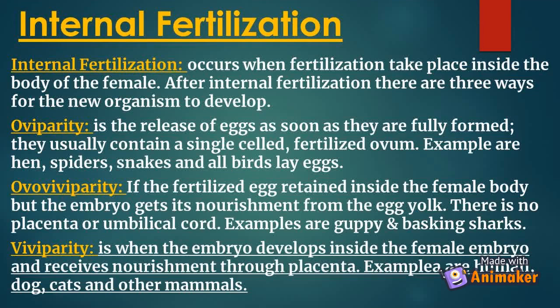Ovoviviparity is when the fertilized egg is retained inside the female body but the embryo gets its nourishment from the egg yolk. There is no placenta or umbilical cord. Examples are guppies and basking sharks. Viviparity is when the embryo develops inside the female and receives nourishment through a placenta. Examples are humans, dogs, cats, and other mammals.